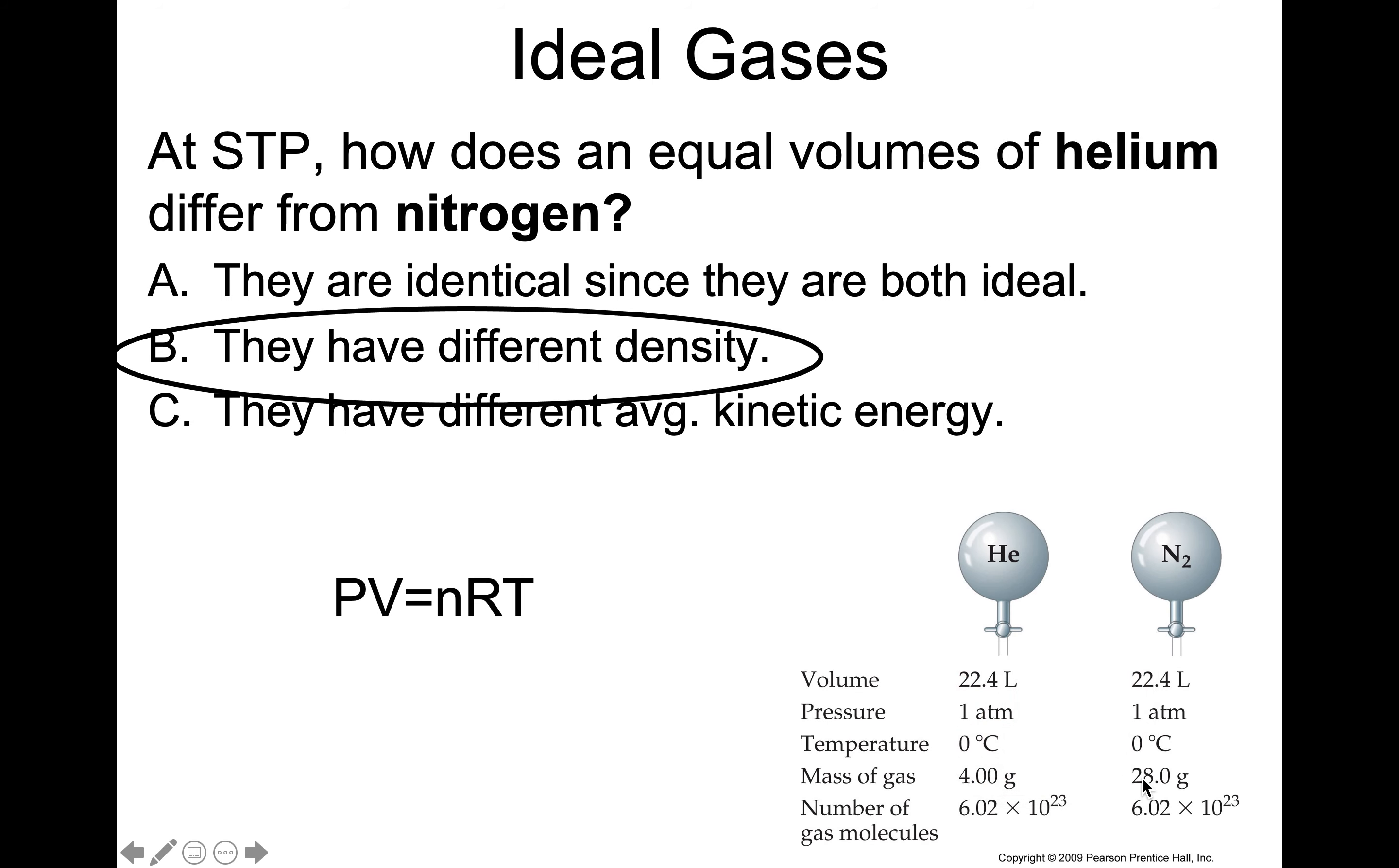I think the best answer is they have different density. If we think back to our ideal gas equation, PV equals nRT, I think both helium and nitrogen are going to be well defined and fit the description of ideal gases. So under STP and equal volume, we're making the same - the pressure, the volume, the temperature, and R is also a constant. So if all of those are the same in each case, they must also have the same number of moles of gas present, the same n value.